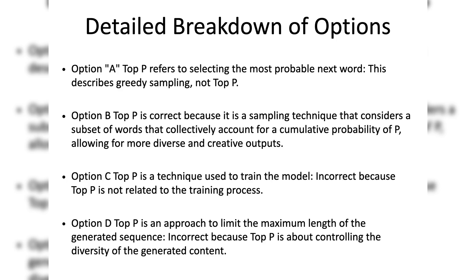Top P, or nucleus sampling, is a sampling technique used in generative AI models to control the diversity of generated text. Instead of always picking the highest probability words, which can lead to repetitive or overly deterministic outputs, top P sampling considers a subset of words that collectively account for a cumulative probability of P. This allows for more diverse and creative outputs by giving a chance to less probable words while still maintaining coherence.